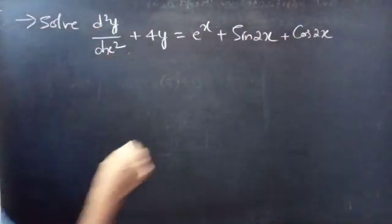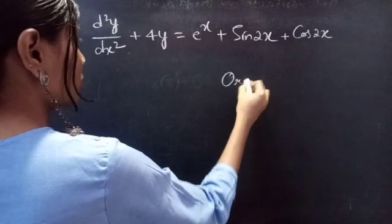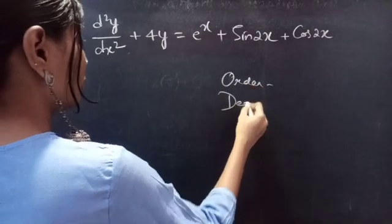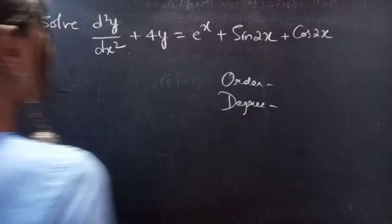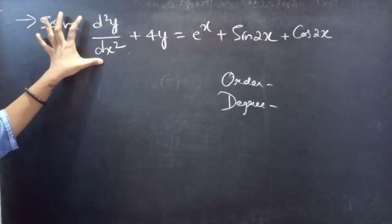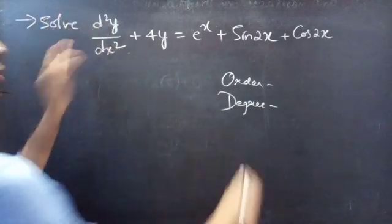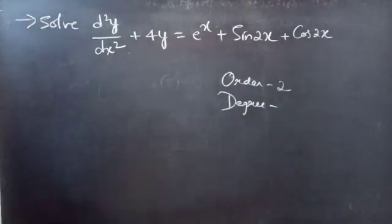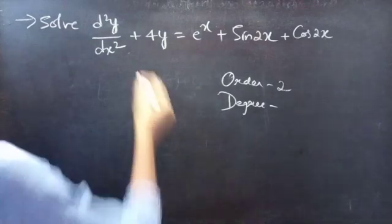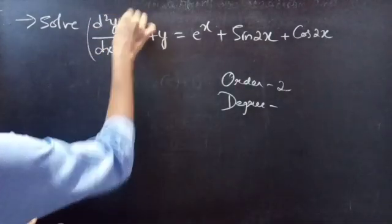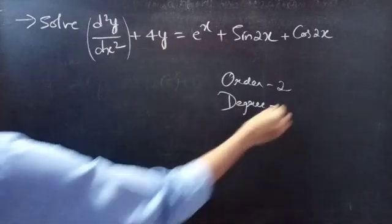Firstly, we will find the order and degree of the given differential equation. The highest derivative here is d²y/dx², so we get order 2, meaning we will get 2 constants in the solution. The highest power of the highest derivative is our degree, so degree will be 1.